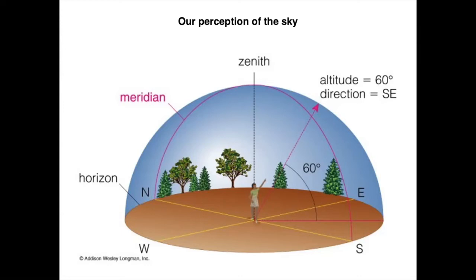Right ascension and declination are two coordinates that every observer on the surface of the planet agrees on. But for a local observer, the fundamental plane can be defined as the horizon — the plane that is tangential to the surface of the earth for any observer. You have the zenith, which is the point directly overhead of the observer. If you have the north and south cardinal points, an arc of a circle passing through the north point, the zenith, and the south point is the local meridian.